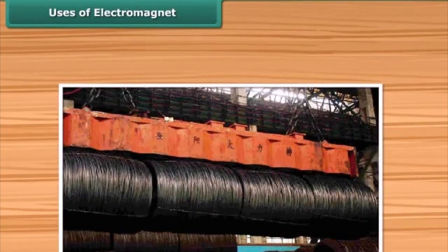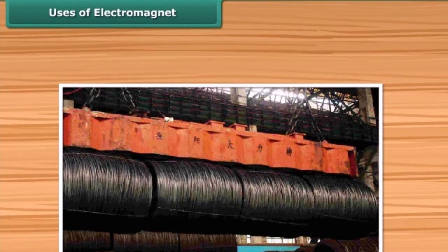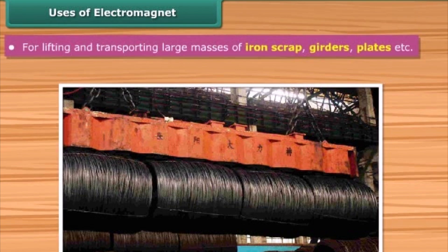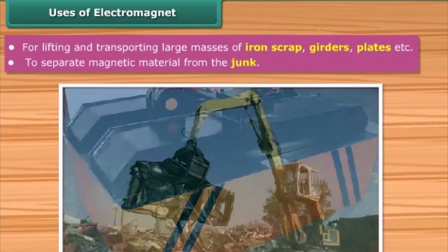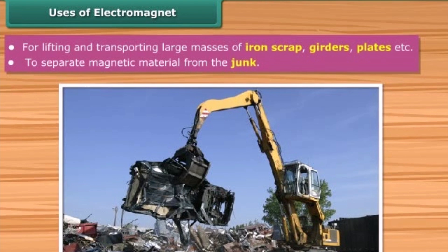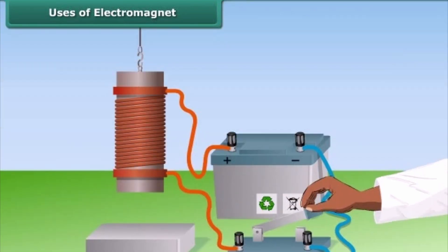You must have observed cranes lifting heavy iron scraps in scrap yards. These lifts make use of electromagnets for lifting and transporting large masses of iron scrap, girders, plates, etc. It is also used to separate magnetic material from the junk. The main advantage of electromagnets over the normal magnets is that they can easily start and stop, and the strength of the magnetic field can be effectively controlled.